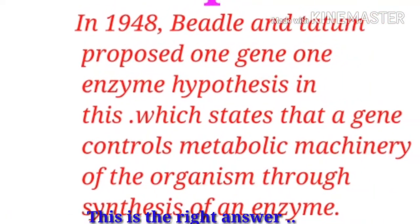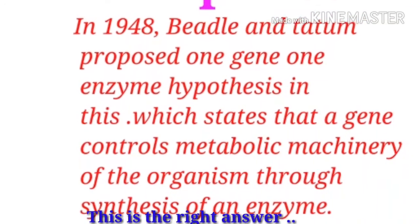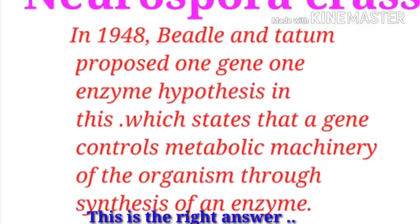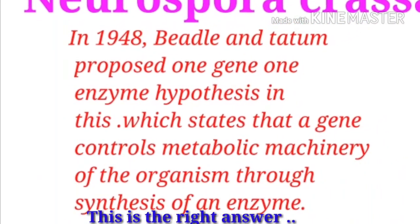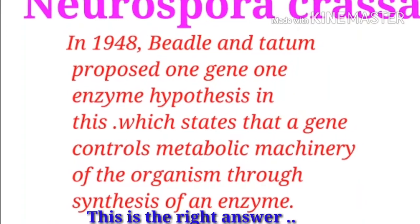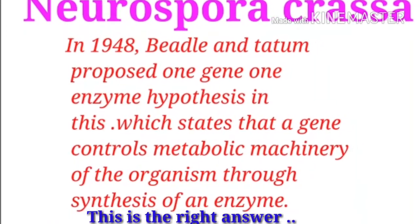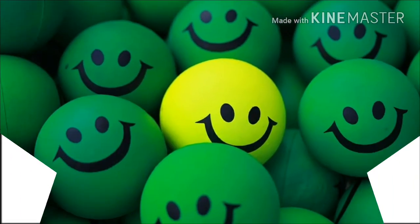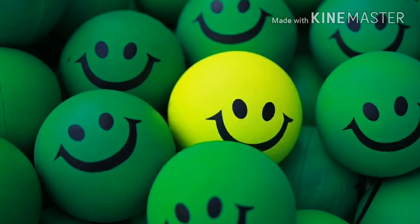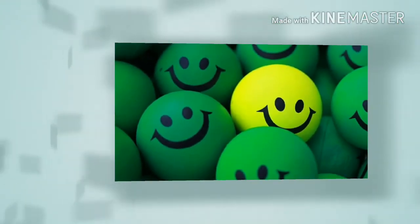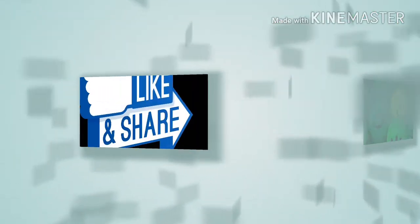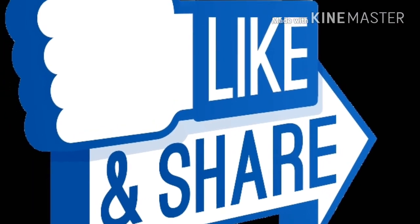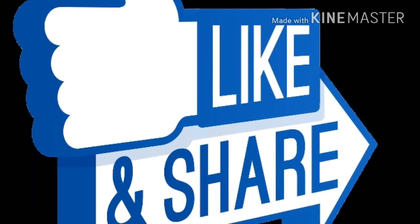The last option is Neurospora crassa. In 1948, Beadle and Tatum proposed the one gene, one enzyme hypothesis. This states that a gene controls the metabolic machinery of the organism through the synthesis of an enzyme.